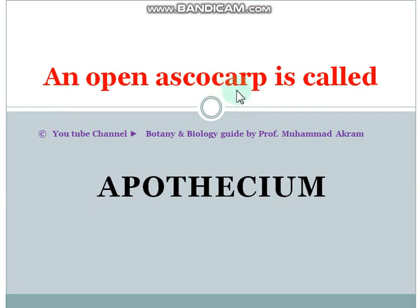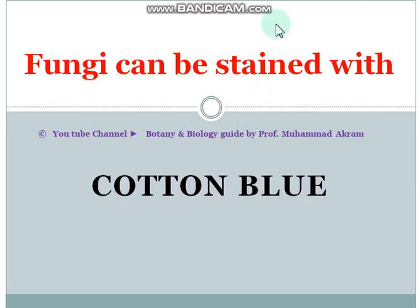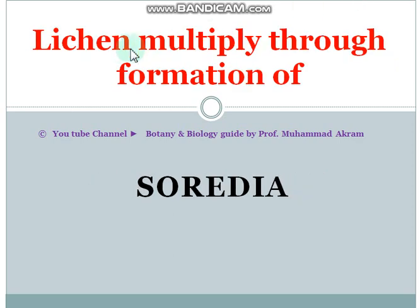There are various types of ascocarp. A closed type ascocarp is called a cleistothecium, while an open type ascocarp is called an apothecium. Lichens multiply through the formation of soredia — soredia, basidia, and isidia are types of reproduction in lichens.